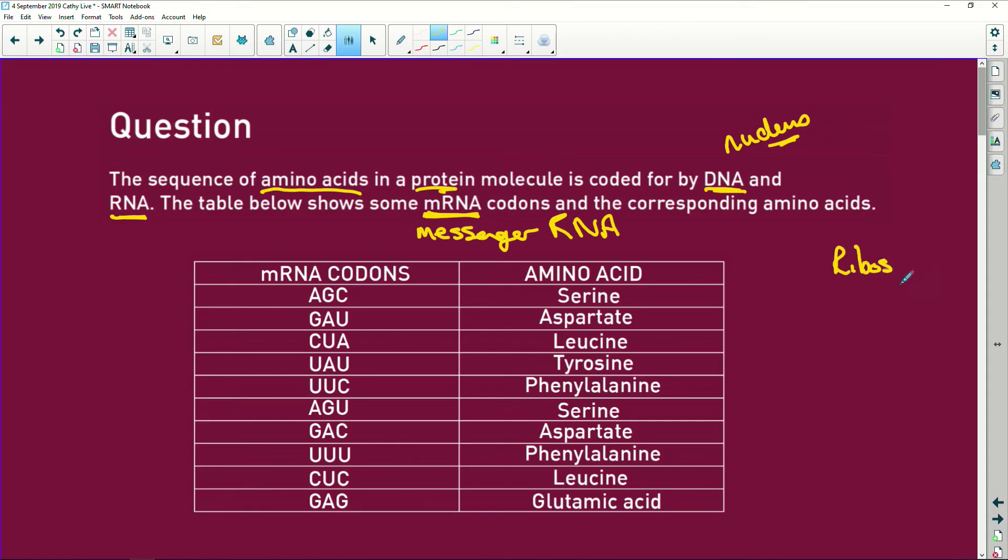So how does it get to the ribosome? The DNA in the nucleus uses messenger RNA codons to send that message to the ribosome so the ribosome can produce the proteins.